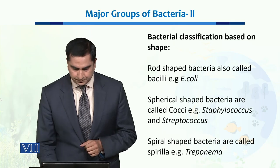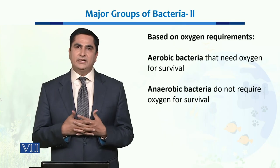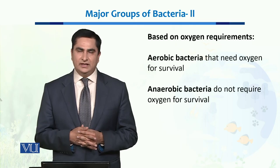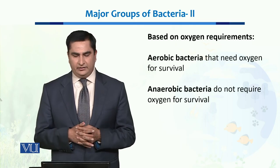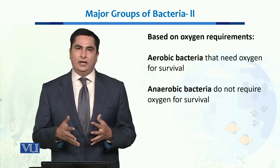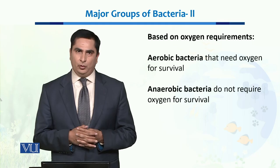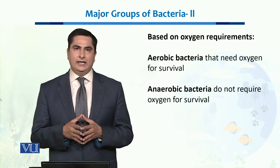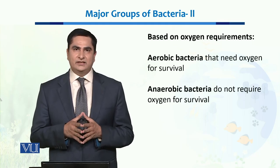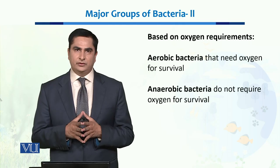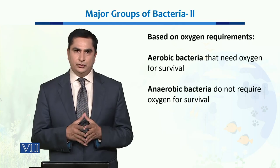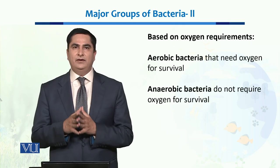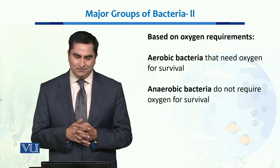Based on the requirement of oxygen, there are two major types of bacteria. The first are called aerobic bacteria. Aerobic bacteria require oxygen in order to survive, just like humans do — they cannot survive in the absence of oxygen.